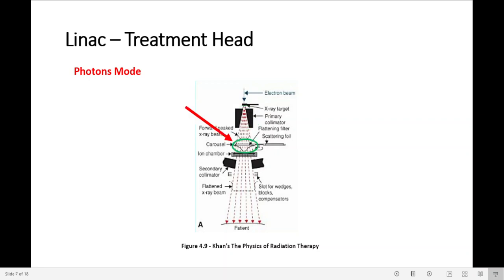Then the beam can go through a flattening filter or not. A flattening filter is inserted in the beam to make the beam intensity uniform across the field. If treated without the flattening filter, the energy will be a FFF, flattening filter-free energy.